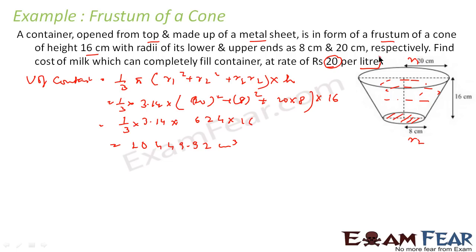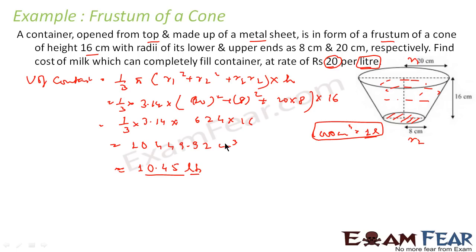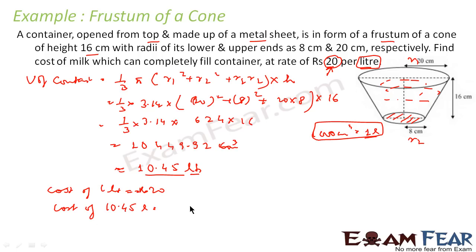We need to convert centimeters cubed to liters because the cost is given per liter. We know 1000 cm³ = 1 liter. So dividing by 1000 gives approximately 10.45 liters of milk. The cost of 1 liter is ₹20, so total cost = 20 × 10.45.